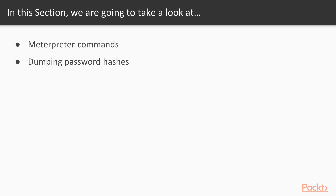We'll be looking at how to dump the password hashes and finally decoding them with various decryption algorithms. We'll then be looking at privilege escalation, which will involve spawning a shell with the meterpreter, giving us the different administrative privileges necessary to perform even more functions on the target after exploitation.